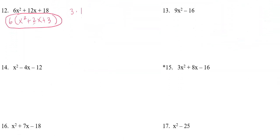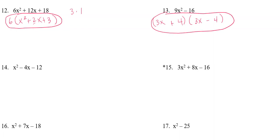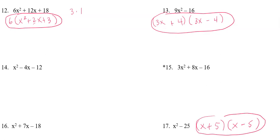Number thirteen is the difference of two perfect squares. Come up with the two square roots: the square root of 9x² is 3x, and the square root of 16 is 4. Write each down twice, giving one a plus and one a minus: (3x + 4)(3x − 4). While we're at it, number seventeen is the same idea — square root of x² is x, square root of 25 is 5, giving (x + 5)(x − 5).